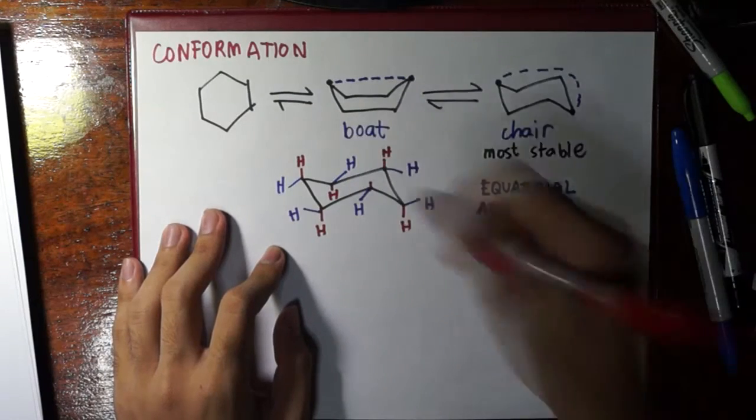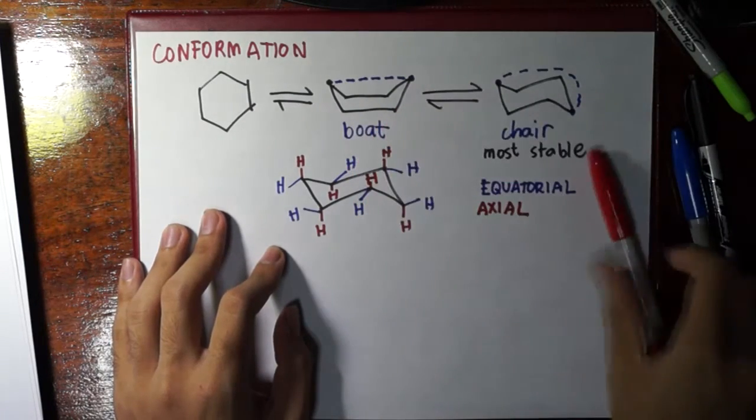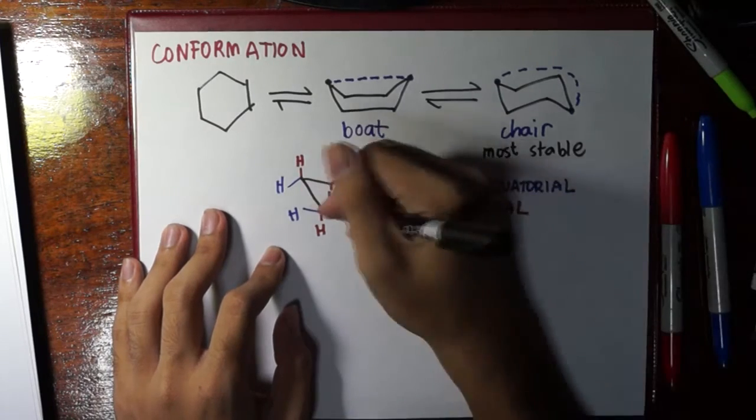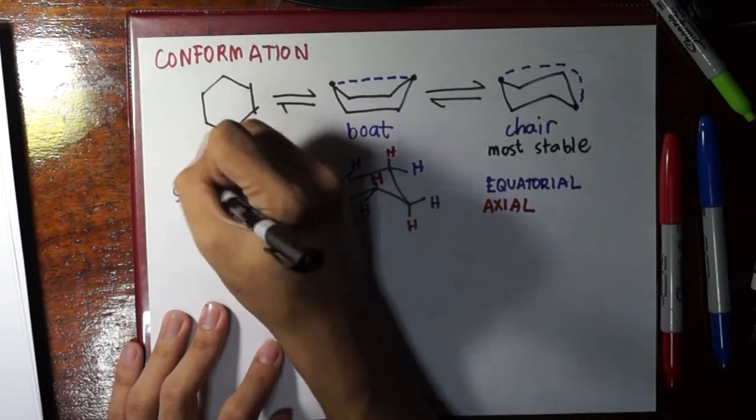These are axial bonds. So how do we know if a bond is equatorial or axial? Well, remember that all these are SP3. And if it's SP3, it's tetrahedral.